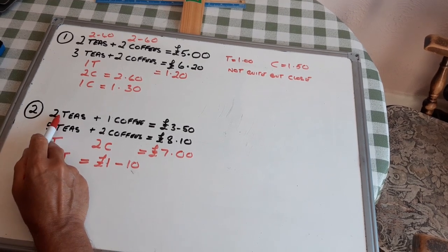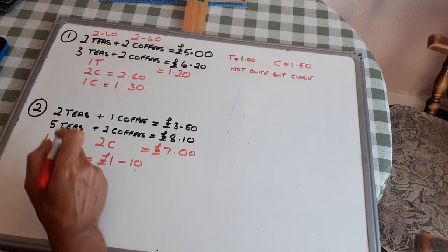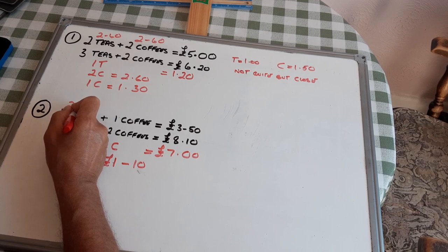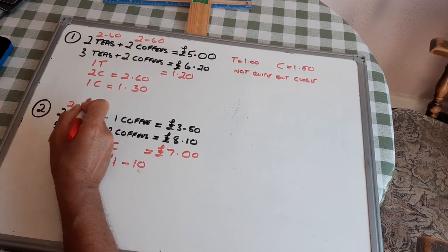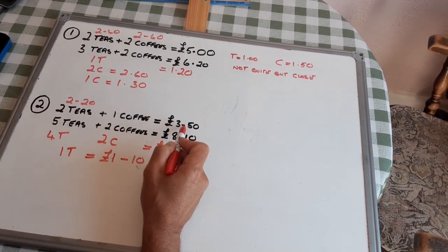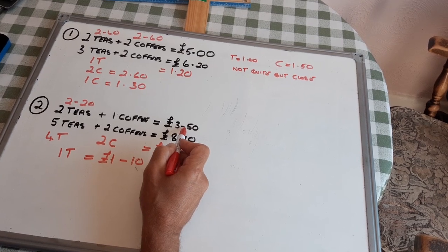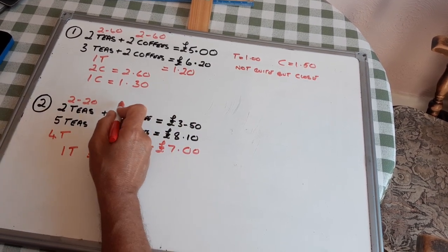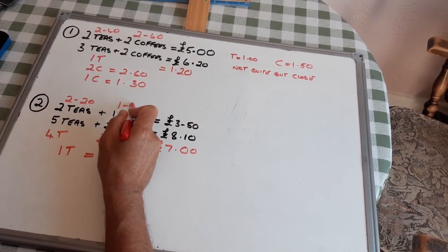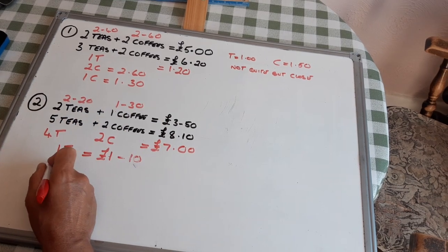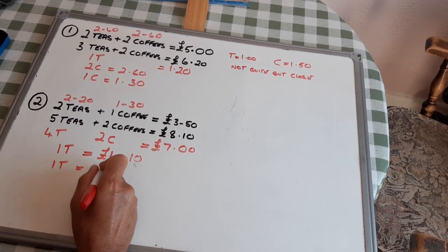So, two teas are £2.20. The total cost is £3.50. So, this coffee has to be £1.30.